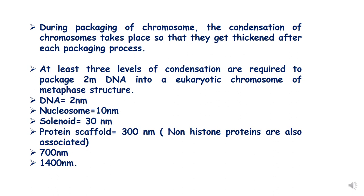During packaging of chromosomes, condensation takes place so that they get thickened after each packaging process. In humans there are 46 chromosomes and the total amount of DNA is approximately 2 meters across all 46 chromosomes. To accommodate this large DNA into a small nucleus, packaging is required, and during this packaging, 3 levels of condensation take place so that the 2-meter long DNA gets accommodated inside the small nucleus.